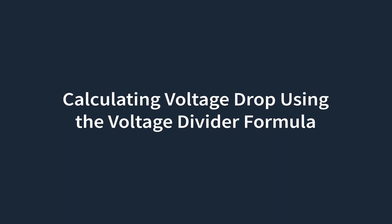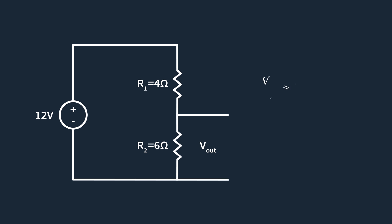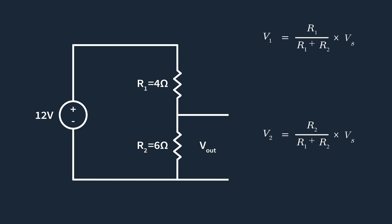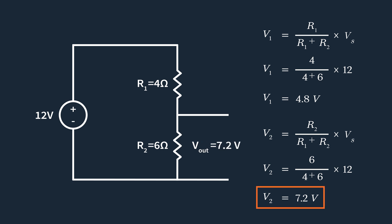Let's look at an example of a voltage divider circuit. In the given circuit with a 12-volt power supply, two resistors R1 equals 4 ohms and R2 equals 6 ohms are in series. Using the voltage divider formula, V1 is equal to R1 divided by the sum of R1 and R2, multiplied by the source voltage. Similarly, V2 is equal to R2 divided by the sum of R1 and R2, multiplied by the source voltage. Substituting the values, the voltage drop across R1 is 4.8 volts and across R2 is 7.2 volts. As we usually care about the voltage drop over R2 to ground, 7.2 volts is the output of our voltage divider circuit.